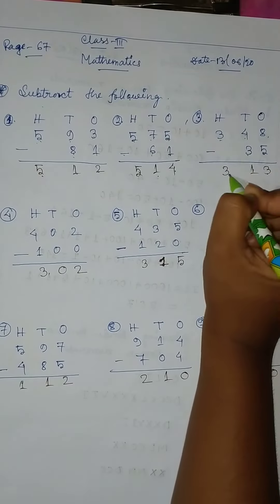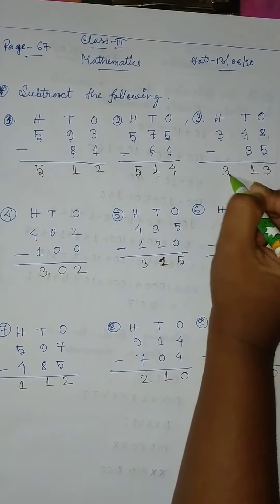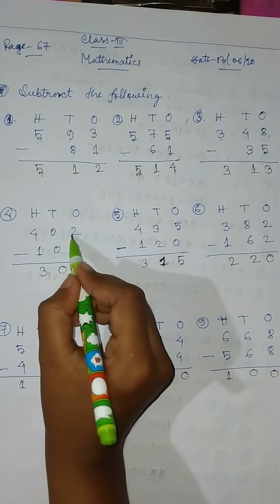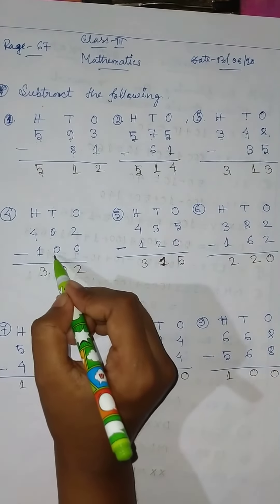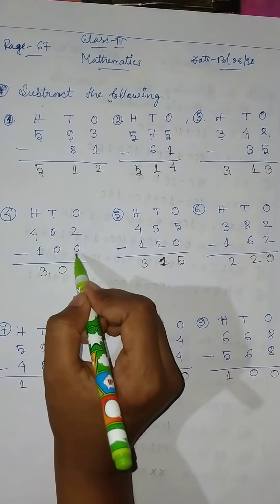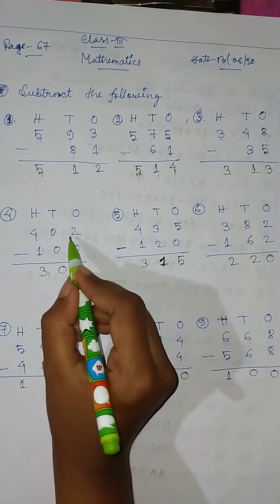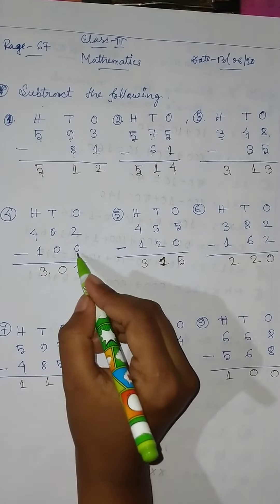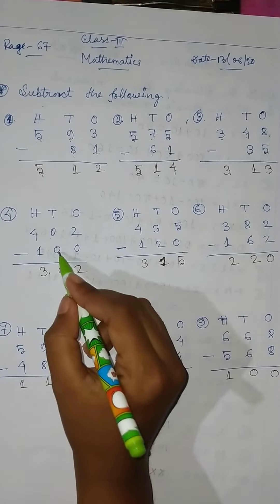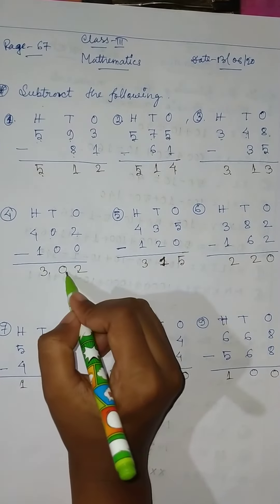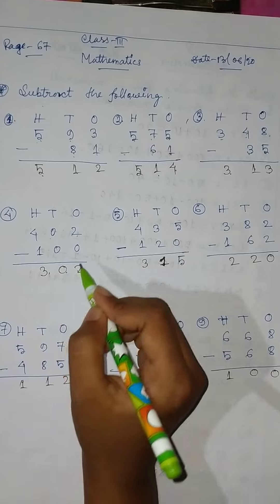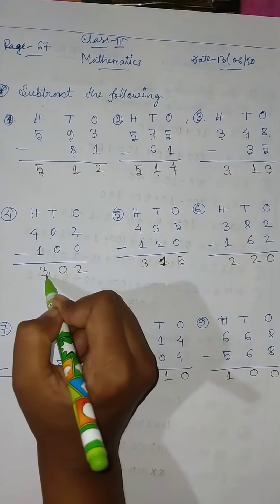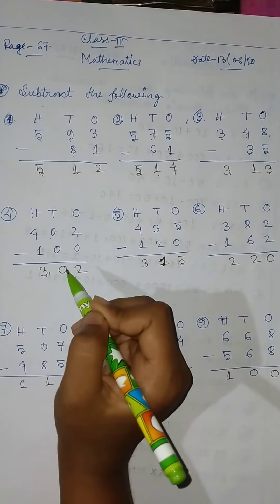Okay, then 402 minus 100: 2 minus 0 equal to 0, 0 minus 0 equal to 0, and 4 minus 1 equal to 3. Okay.